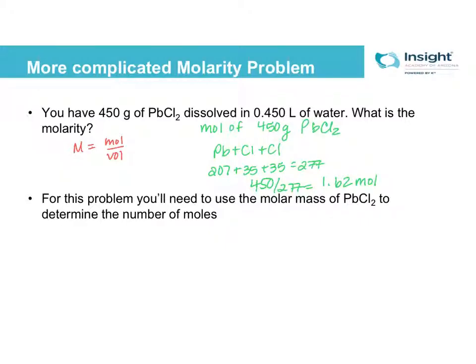So if I come back over here to my molarity equation, I'm going to put 1.62 on top. My volume is 0.45. And that's going to give me 3.61 molar lead chloride.